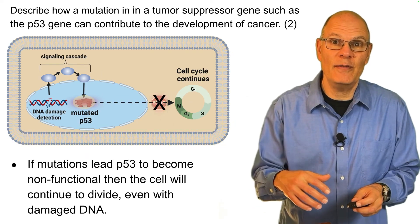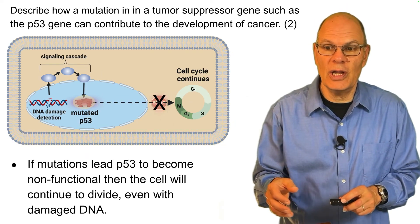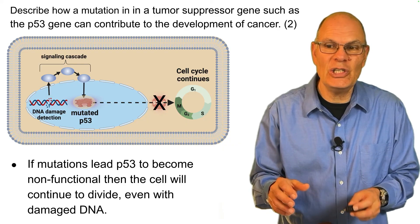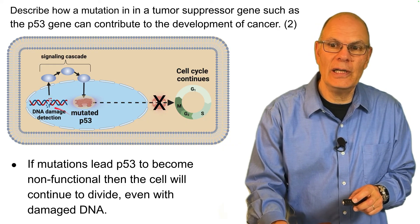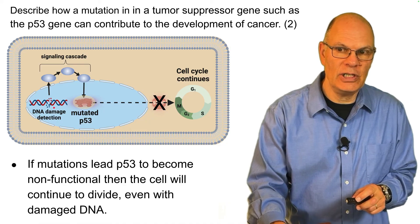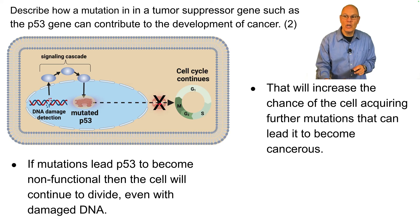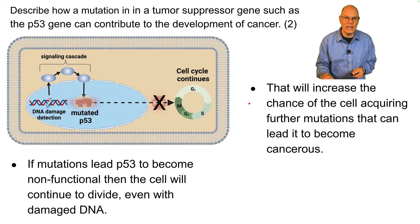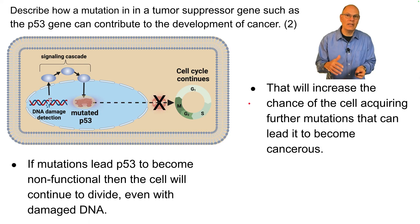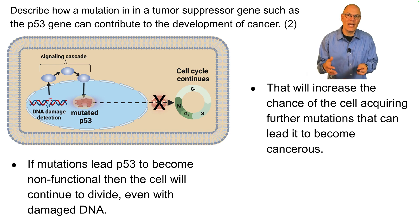If mutations lead p53 to become non-functional, then the cell will continue to divide even with damaged DNA. DNA damage is detected, but p53 can't do anything about it, so there's no stop signal. The cell continues to divide, increasing the chance of acquiring further mutations that can lead it to become cancerous — dysregulation of a signaling cascade and cell cycle repair mechanism leading to cancer.